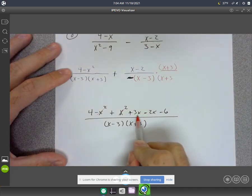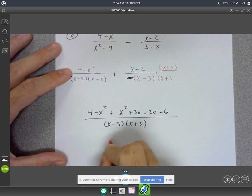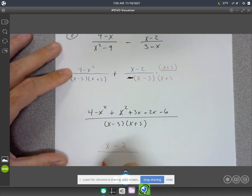Let's see here. We're going to have 3x minus 2x, which is 1x. And then you have a positive 4 and a negative 6. So that will be minus 2. And then over x minus 3, x plus 3. And that should be our final answer.